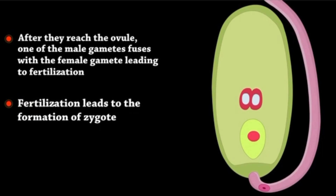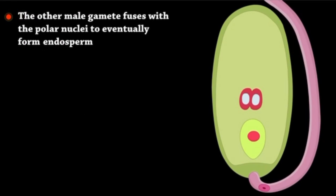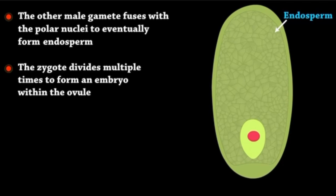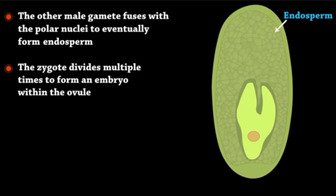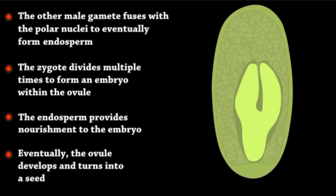Fertilization leads to the formation of a zygote. The zygote divides multiple times to form an embryo within the ovule. The endosperm provides nourishment to the embryo. Eventually, the ovule develops and turns into a seed.